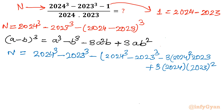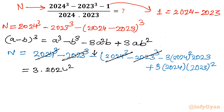Now you can easily see — once we expand the bracket, 2024³ cancels out (the minus sign is there), then 2023³ cancels out. So what is left is: 3·(2024²)·2023, then minus — applying the sign rule — minus 3·2024·(2023²).